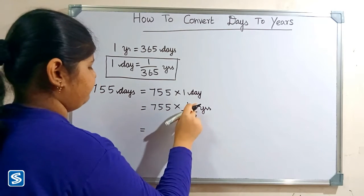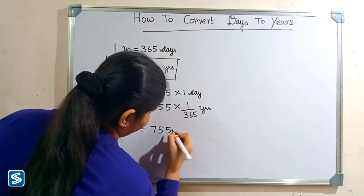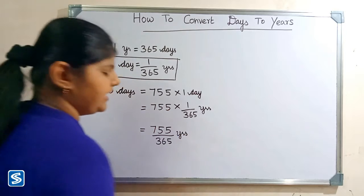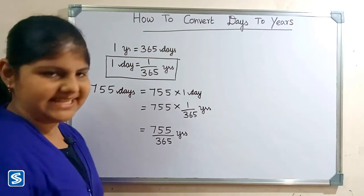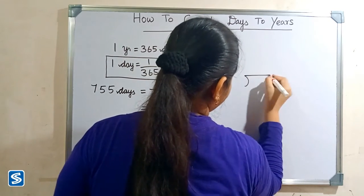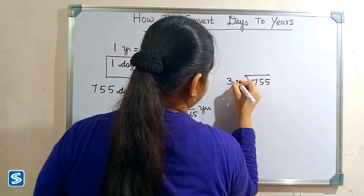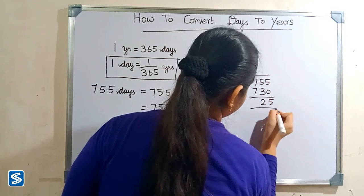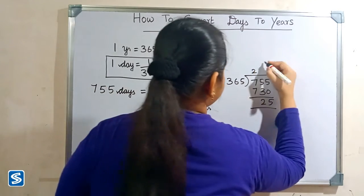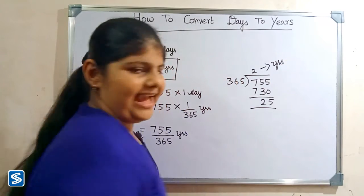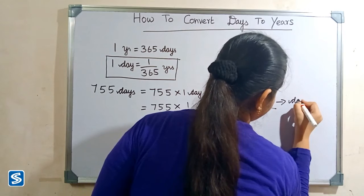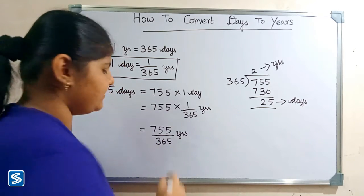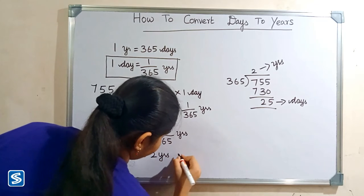755 by 365 years. Now we have to divide 755 by 365. Come on, now let us divide. Now we have to consider quotient as years and remainder as days. So when we divide 755 by 365 years, our answer will be 2 years 25 days.